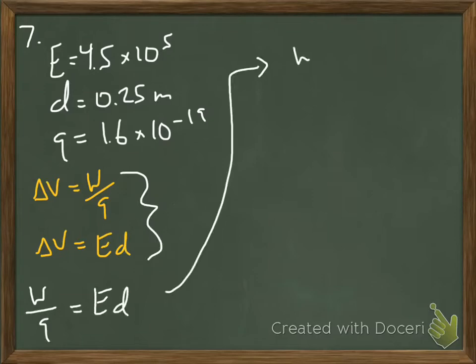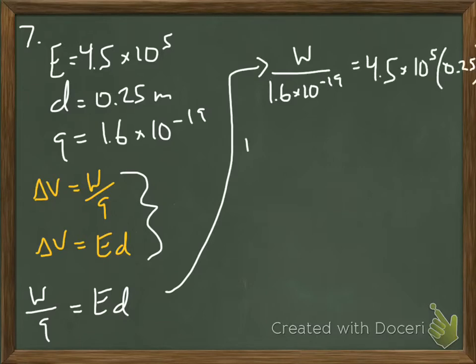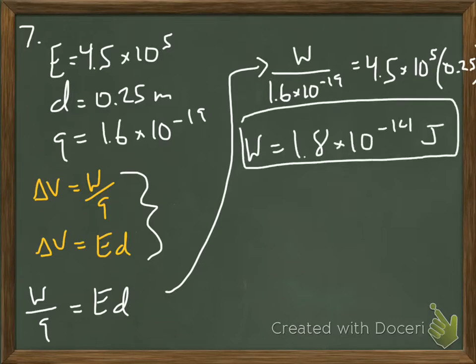We're going to need to derive an equation for ourselves here, sort of. We can take the two equations that I gave you for electric potential difference, delta V, and then set those equal to each other, and then that gives us everything we need. We can plug in, cross-multiply, and solve for the work.